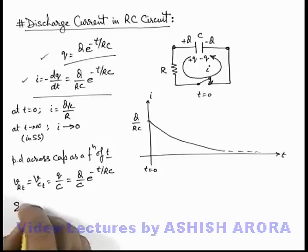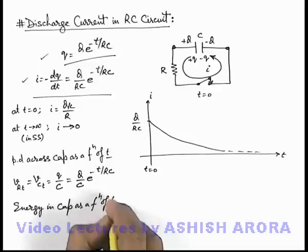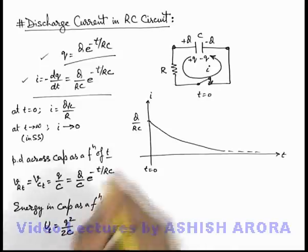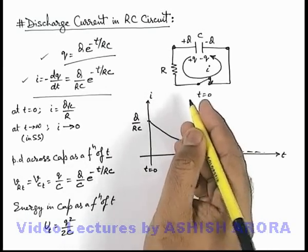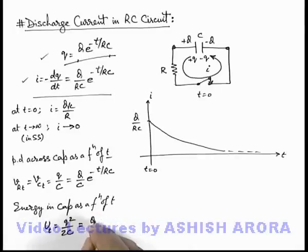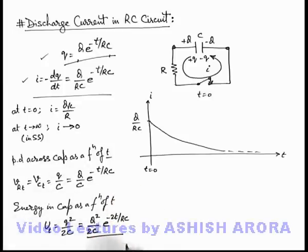If we calculate the energy in the capacitor as a function of time, this energy can be written as q²/2C, where q is the instantaneous charge on the capacitor plates. Substituting the value of q, we get the energy as (Q²/2C)·e^(-2t/RC). This is the energy stored in the capacitor as a function of time.